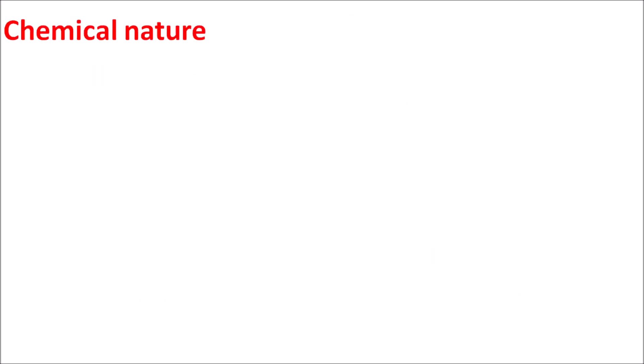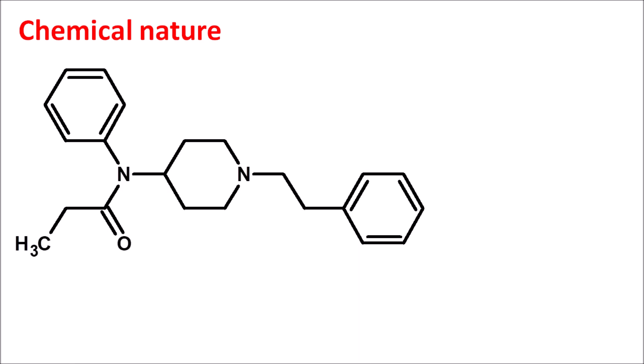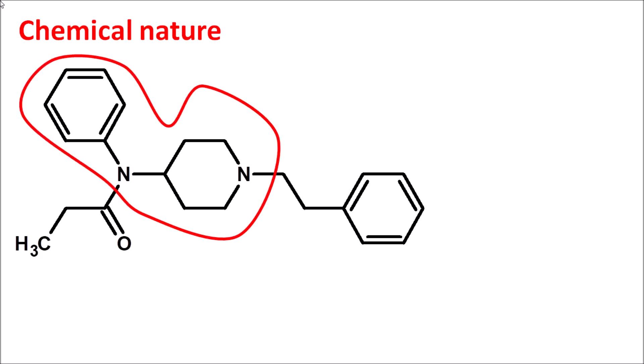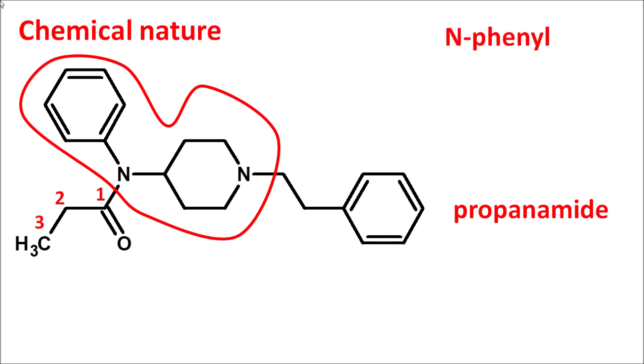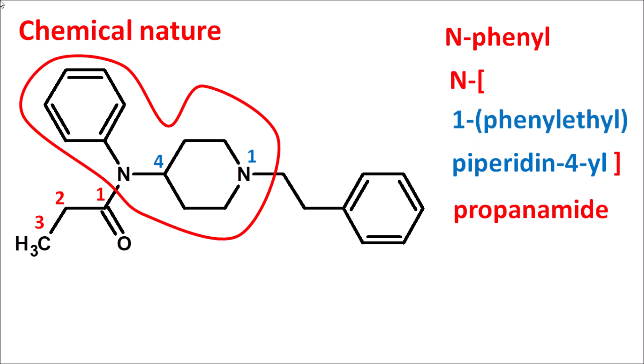The structure of fentanyl clearly shows an anilino piperidine ring system. For the IUPAC name, the amide is the principal functional group — it is a propanamide derivative. On the nitrogen of the propanamide, one phenyl ring and one piperidine ring are present, giving N-phenyl. The piperidine ring is numbered such that nitrogen is position 1 and the attachment is at position 4 (piperidin-4-yl). A phenylethyl chain is attached to the piperidine nitrogen, giving the complete IUPAC name of fentanyl: N-phenyl-N-(1-phenethylpiperidin-4-yl)propanamide.